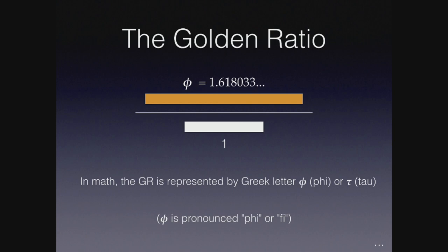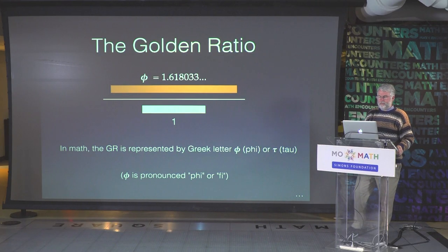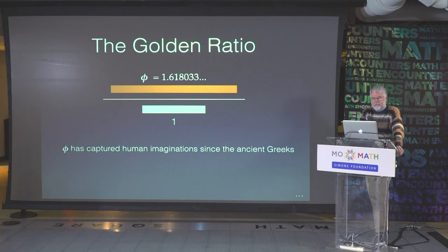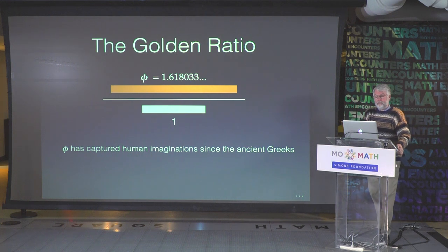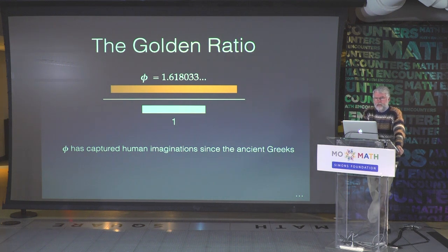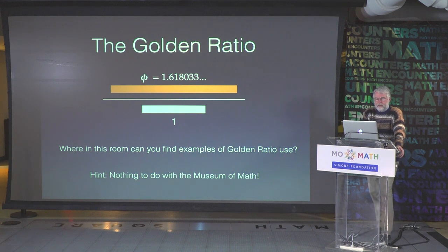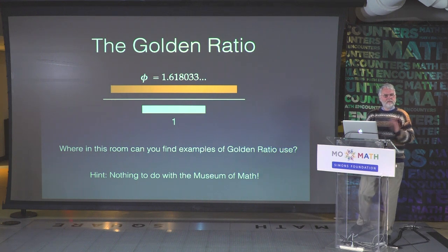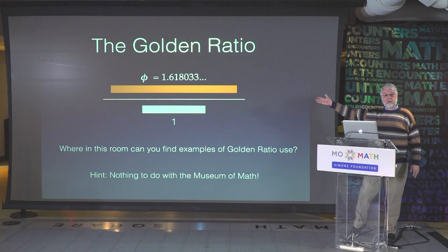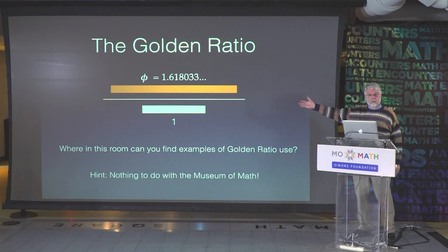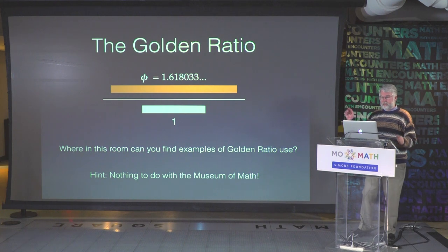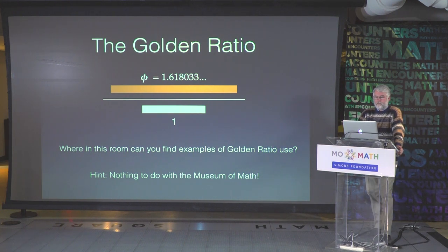In math, the golden ratio is represented by the Greek letter phi — sometimes tau, but we'll use phi. This number has captured human imaginations since the ancient Greeks. Where in this room can you find examples of golden ratio use? I'll give you a hint — it has nothing to do with the Museum of Math. It doesn't have anything to do with the sinks in the bathrooms, which are pentagons. It doesn't have anything to do with the various tilings and exhibits that might be pentagon-based. So where in this room right now can you find examples of the golden ratio?